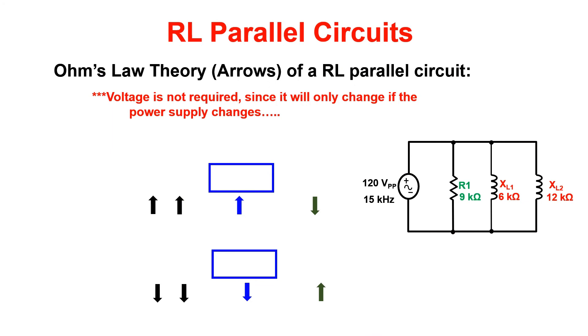When we look at Ohm's law theory for a parallel circuit we know that voltage is constant in a parallel circuit. With that voltage is not required for our theory unless the power supply changes.